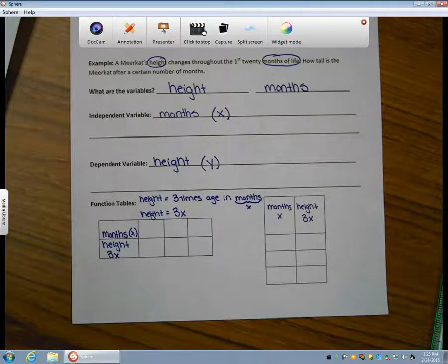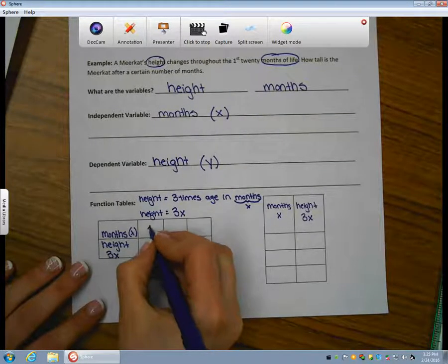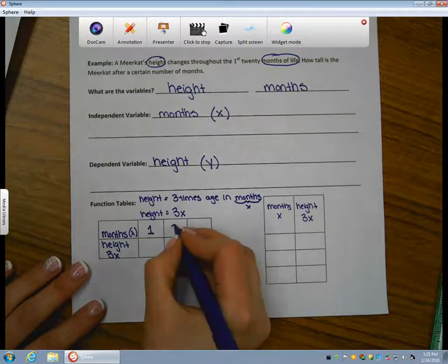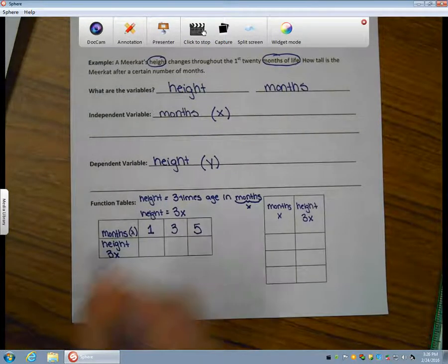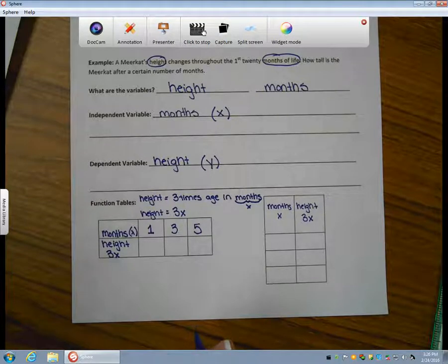So let's fill in some values for x. I'm going to use one month of life, three months, and five months for our meerkats. Let's determine what the height will be after these amounts of time.